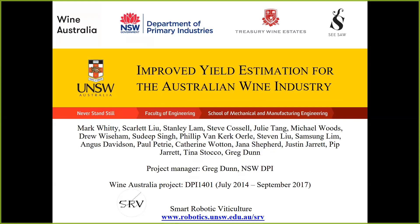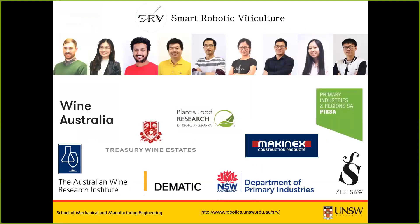First, a little bit of introduction to the project. This has been a three-year study funded by Wine Australia through the New South Wales Department of Primary Industries. We've worked closely with Treasury Wine Estates in the Clare Valley and Seesaw Wines at Orange on a couple of study blocks in each location. The group is primarily based at UNSW for the research aspects, with many team members and ongoing projects in viticulture, robotics, and automation.